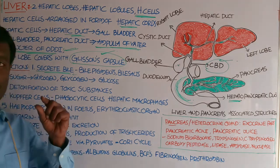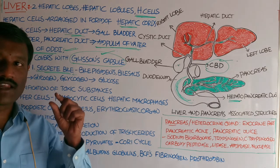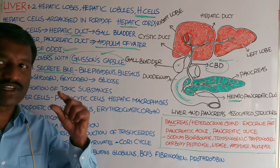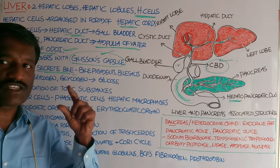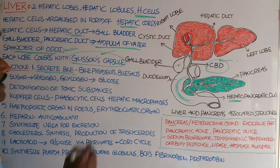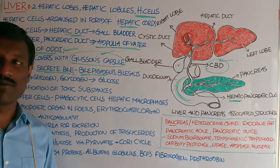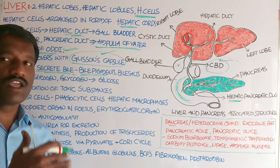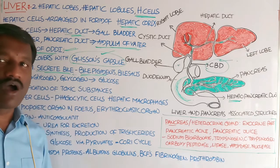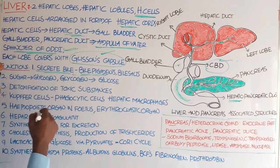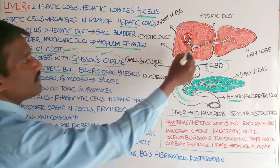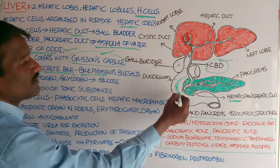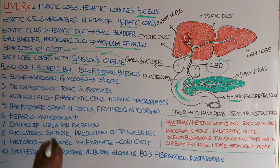The bile salts — sodium and potassium tarocholates and glycocholates — help in the digestion and emulsification of fats. The bile pigments are formed by the destruction of hemoglobin from worn-out red blood cells. Bile finally enters the lumen of the U-shaped duodenum.